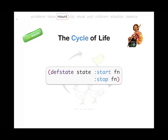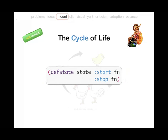Looking at this, we define a state, give it a name, and say 'this is how it starts and this is how it stops.' If you understand this, this is pretty much what Mount is. There's no ceremony — everything else just works with it as you would work with a value, a var, or a function. In a real-world application we have a config state that loads configuration from a file system path, and when you call `mount/start` it goes to the file system, loads that configuration, and binds it to the name `config`.